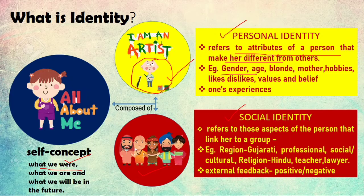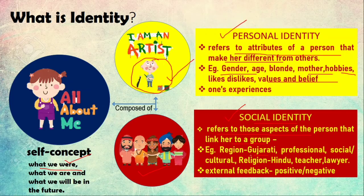Social identity refers to those aspects of a person which link her to a group. For example, if you are a Gujarati, you represent that group. You are a professional — a lawyer, a teacher. You are a Hindu, a Muslim, an Indian. These are all things which link you to a particular group. You could also be a member of a club — that is also your social identity. Social identity is external feedback and can be positive or negative.